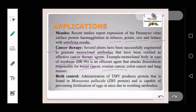Edible vaccines are also used in birth control. Administration of tobacco mosaic virus (TMV) produces a protein found in the zona pellucida — the ZP3 protein — which is capable of preventing fertilization of the egg in mice due to the resulting antibodies.